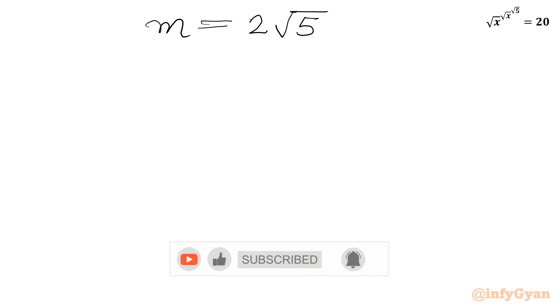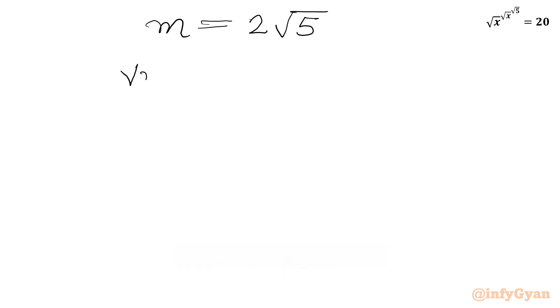So m = 2√5. Recall our substitution: m = (√x)^(√5), so (√x)^(√5) = 2√5.